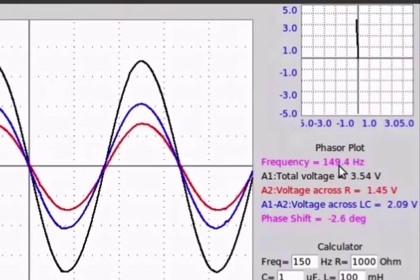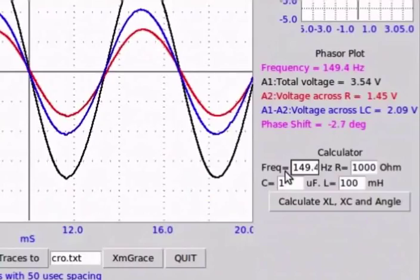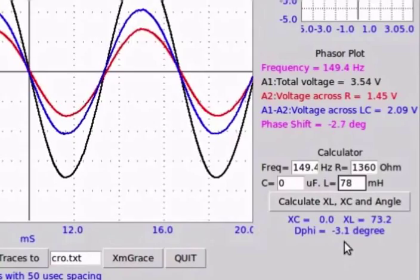Pini yi baki values jonki frequency bat voltages. Pini yi baki values jonka frequency shah 149.4 hertz, resistance shah 1360 ohm, capacitance shah 0 microfarad but inductance shah 78 millihenry. Jain hau calculate XL, XC and angle button ban vayu yaki values. Ke phase shift blakakane kadei minus 3.1 degree.